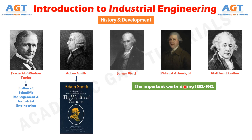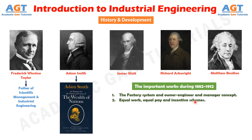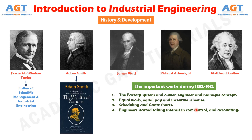The period between 1882 to 1912 was the critical period in the history of industrial engineering. The important works during this period include: 1. The factory system and owner-engineer and manager concept; 2. Equal work, equal pay and incentive schemes; 3. Scheduling and Gantt charts; 4. Engineers started taking interest in cost control and accounting. The most often quoted and acknowledged investigator who led to the discipline of industrial engineering in its present form was F. W. Taylor, who took interest in human aspects of production and productivity.